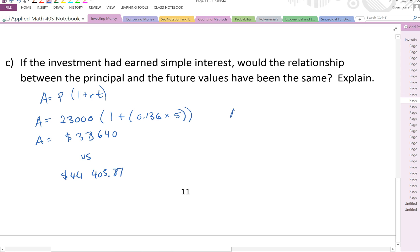And if we do that again for 10 years, you'll see the same thing. And it'll actually be a bit more drastic. So if we do that, 23,000 times 1 plus 0.136 times 10 now, the future value would only be $54,280. Whereas with compound, it was $85,733.96. So you can see that there's much less interest earned with simple interest.